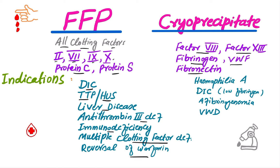The indications for cryoprecipitate include hemophilia A, disseminated intravascular coagulation when there is a low level of fibrinogen, afibrinogenemia, von Willebrand disease, and factor deficiency. Thanks for watching — please subscribe to my channel for the latest medical videos.